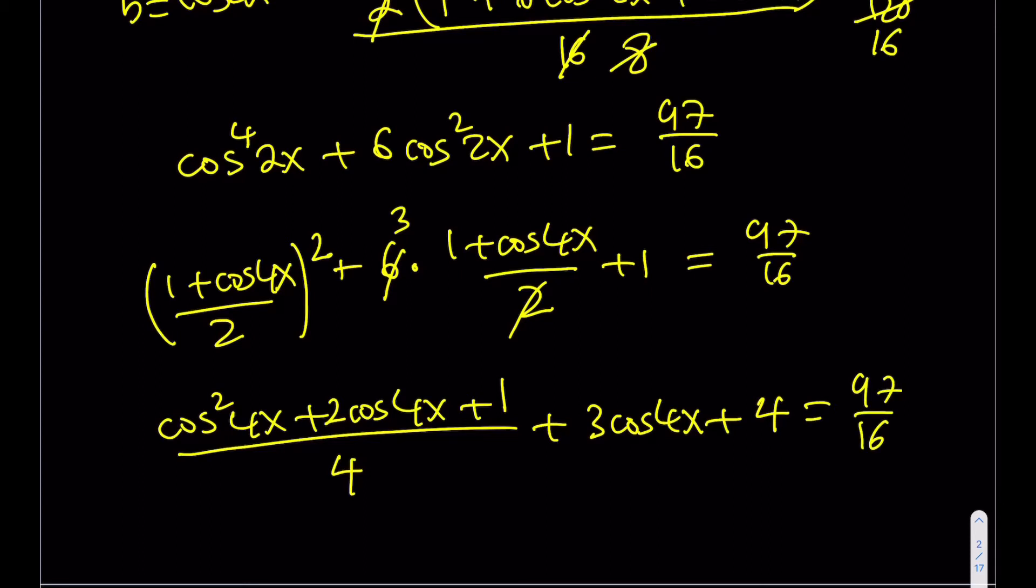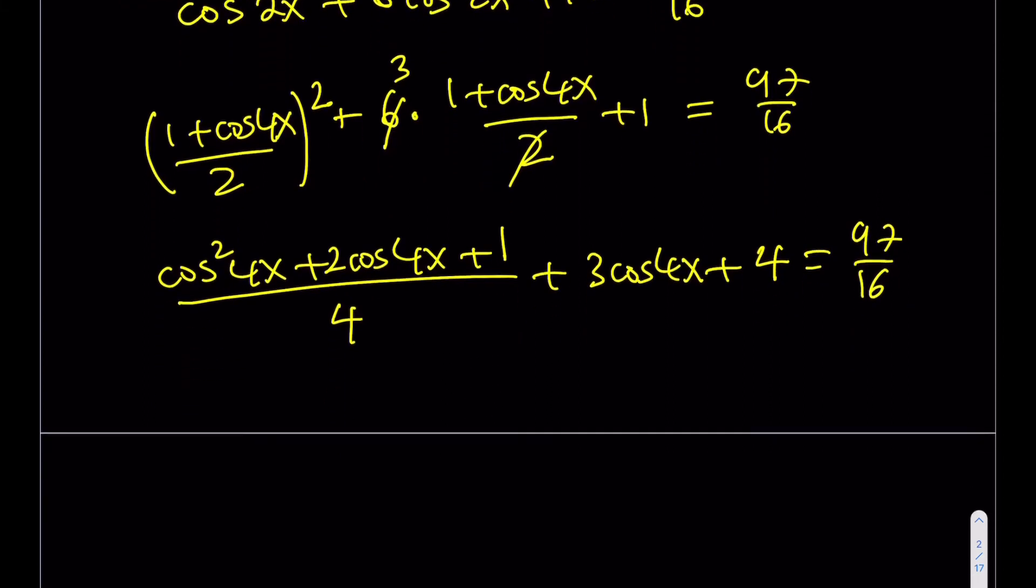Let's go ahead and expand this a little bit more. This is going to give me cosine squared 4x plus 2 times cosine 4x plus 1 over 4. And these two are going to cross cancel. And that's going to give me 3 of cosine 4x plus 3 plus 1, that's going to be a plus 4 here, and that's going to be 97 over 16. What am I going to do next? Well, I'm just going to multiply everything by 4 to clear the fraction. So I'm going to be getting this expression from here, the numerator, plus if you multiply this part by 4, you will get 12 cosine 4x plus 16 is equal to 97 over 4.